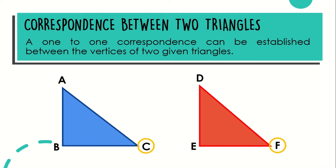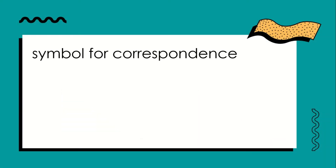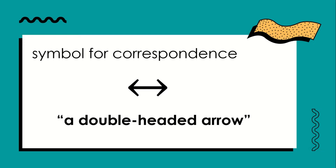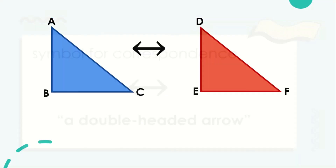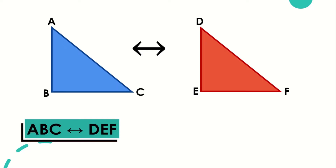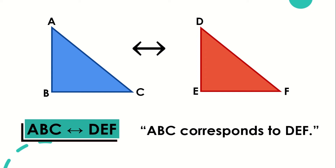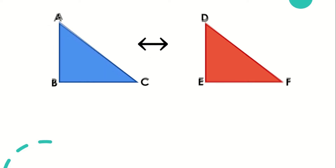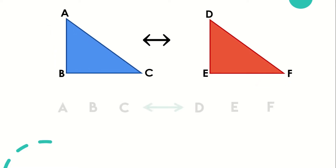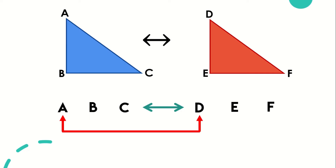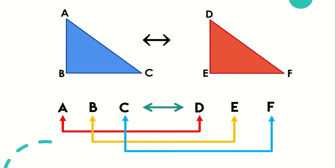This pairing up of vertices can be described by using the symbol for correspondence, which is a double-headed arrow. Therefore, the correspondence between these two given triangles is written as ABC corresponds to DEF. The correspondence between these two given triangles means A can be paired up with D, B with E, and C with F.